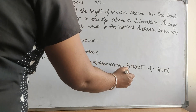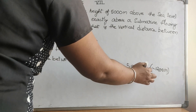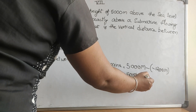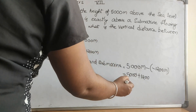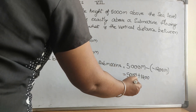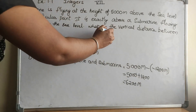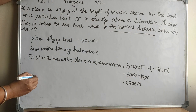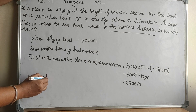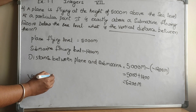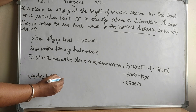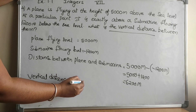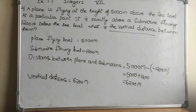5000 minus negative 1200 becomes 5000 plus 1200, which equals 6200 meters. The vertical distance is 6200 meters. Thank you.